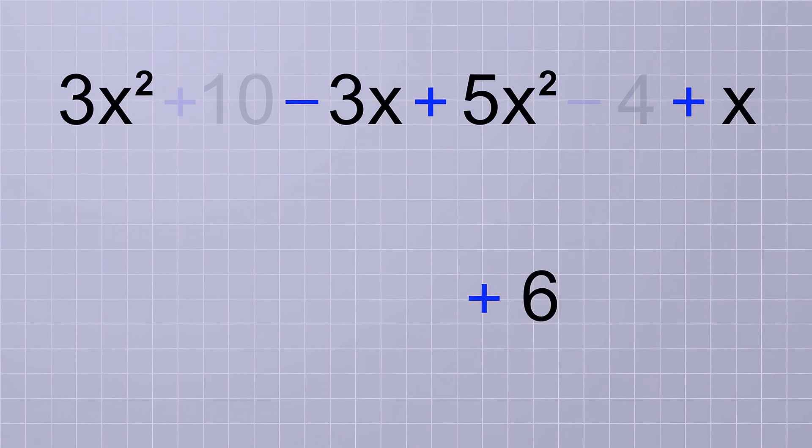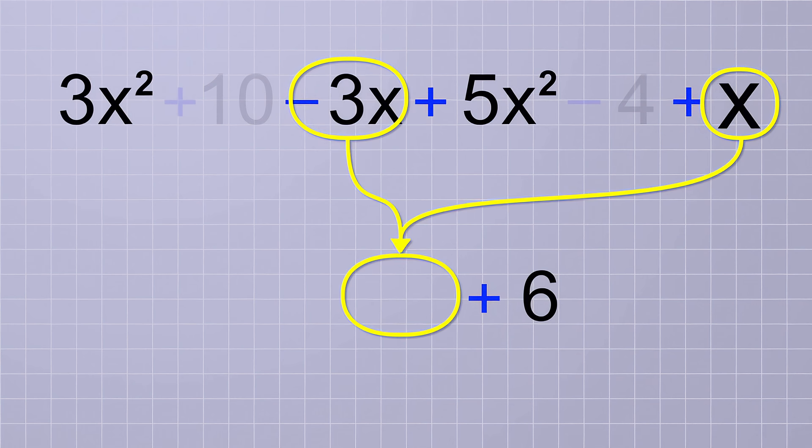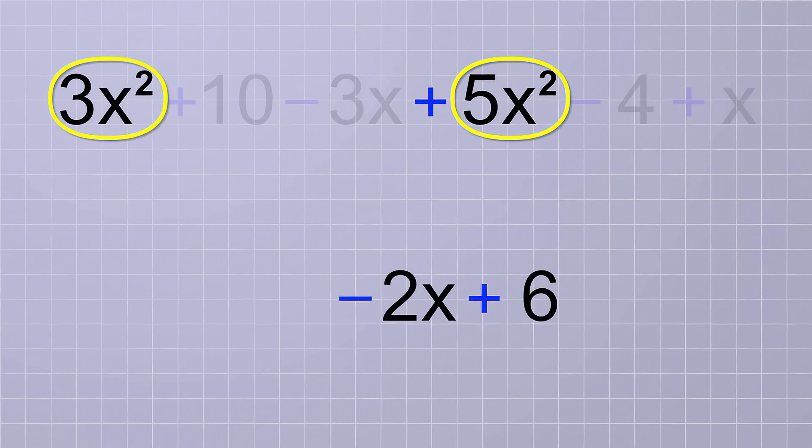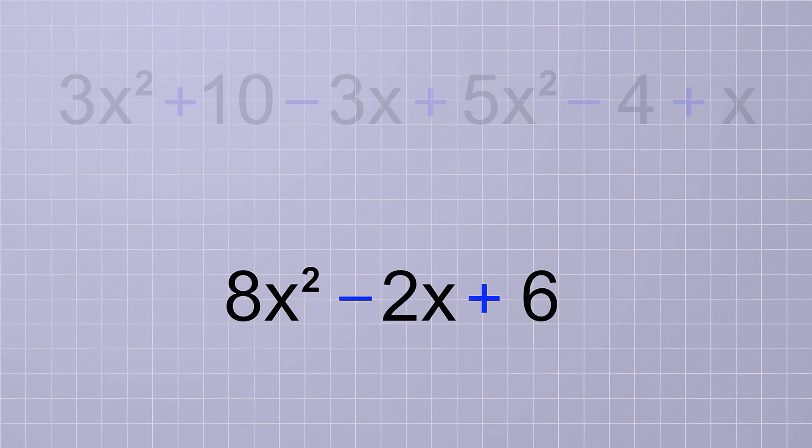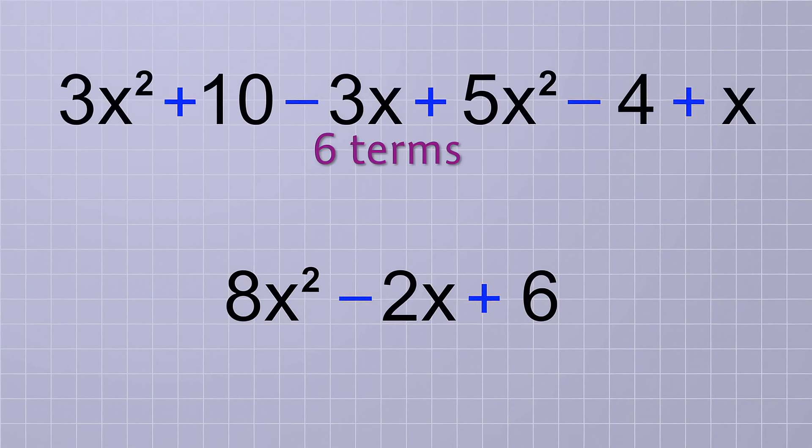Next, we see that there are also two first degree terms, negative 3x and positive x. Those are like terms so we can combine them. Negative 3x plus 1x gives us negative 2x. Last, we see that there are also two different terms that have the variable part x squared, so we can combine them too. 3x squared plus 5x squared gives us 8x squared. So our polynomial started out with 6 terms, but we were able to simplify it to just 3 terms. 8x squared minus 2x plus 6.